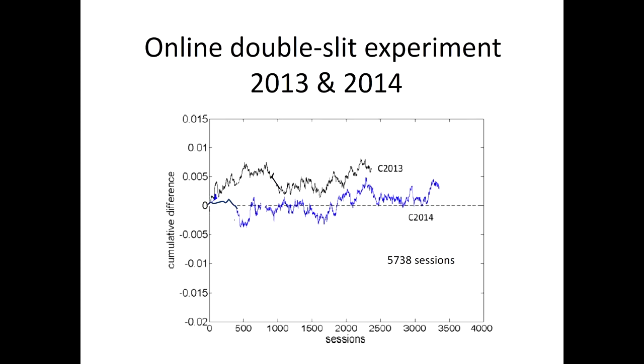We then, again, in every case when we do an experiment and get a result like that, we don't believe it ourselves and have to replicate it just to convince ourselves that it's real. So we did it again, the calendar year 2013 and 2014. So here are 5,700 sessions of the controls. So this is now a cumulative deviation plot. So cumulatively, you should expect that the deviations that you see in this experiment should sort of hover around zero. There shouldn't be any systematic deviation, and there isn't. There's a slight positive movement in the 2013 data, but not in 2014. This is the controls.